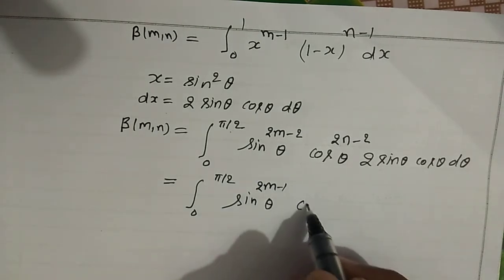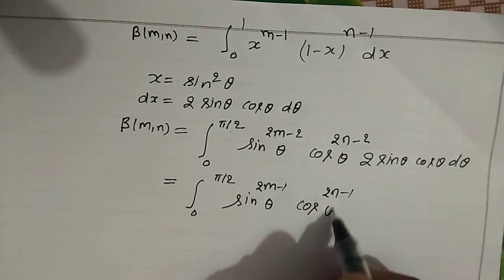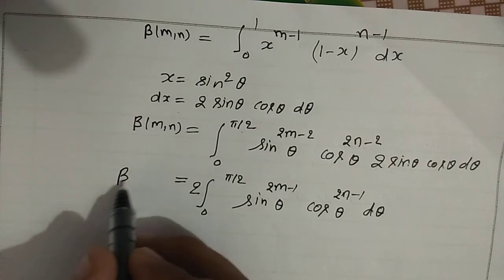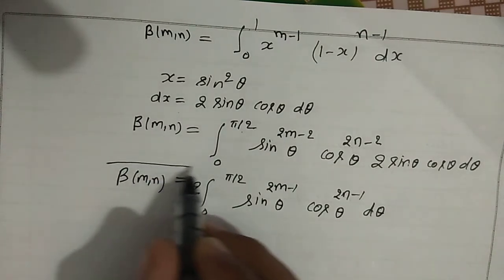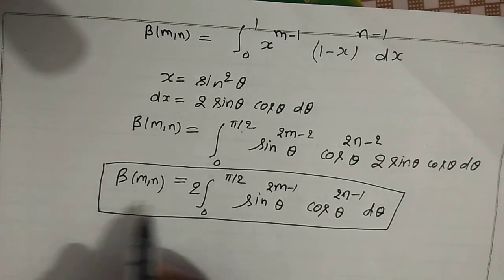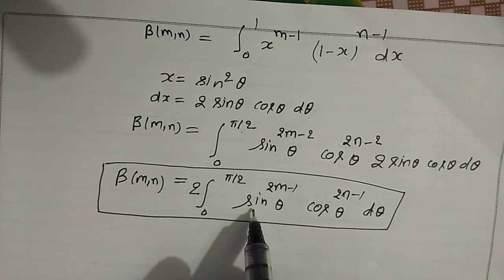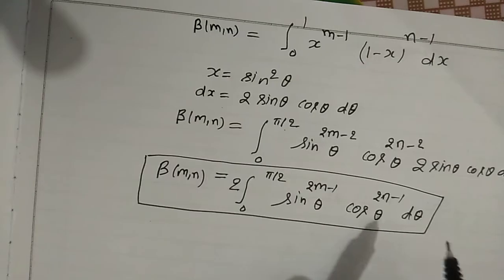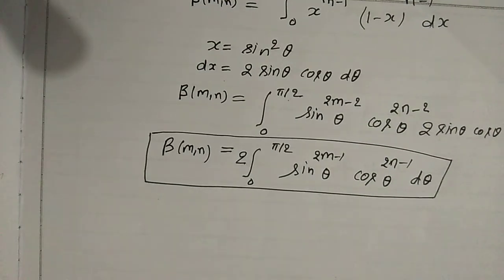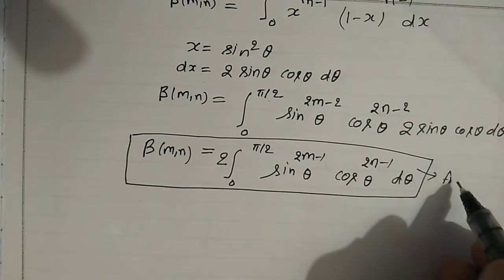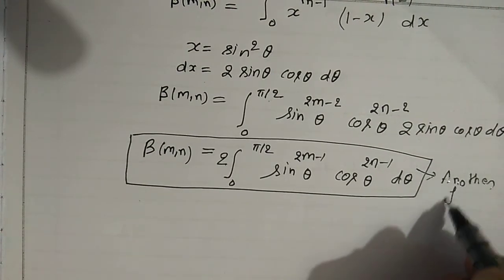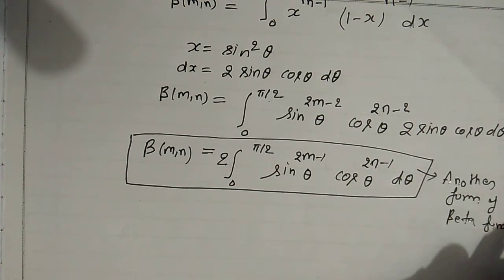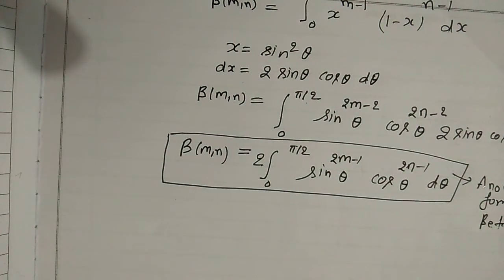Simplifying, beta(m, n) equals 2 times the integral from 0 to π/2 of sin^(2m-1)θ times cos^(2n-1)θ dθ. This is another form of the beta function in terms of sine and cosine.